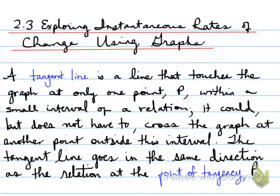Alright, exploring instantaneous rates of change using graphs. So a tangent line is a line that touches the graph at only one point, P, within a small interval of a relation.